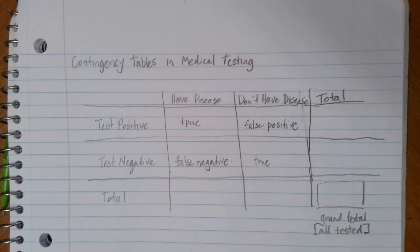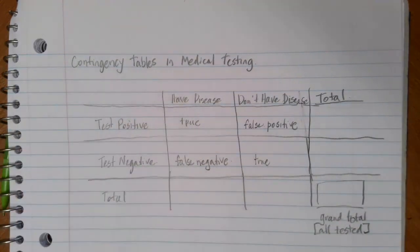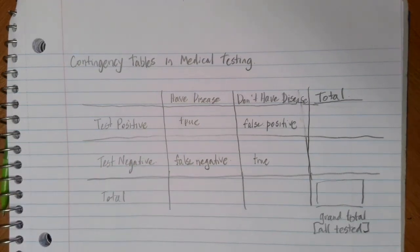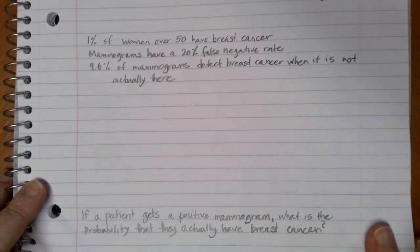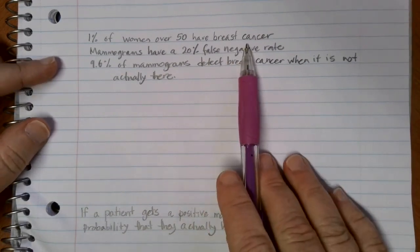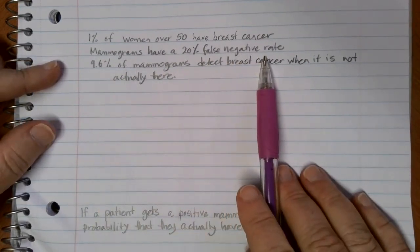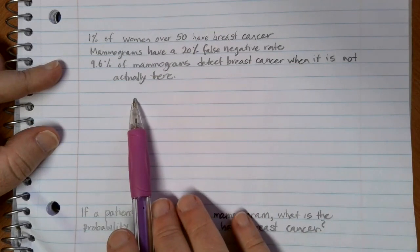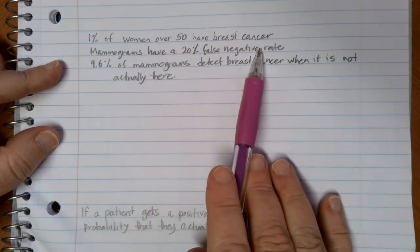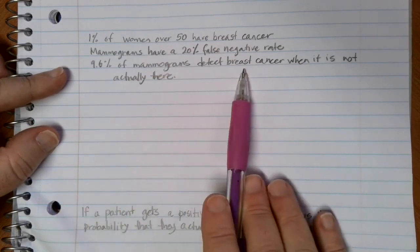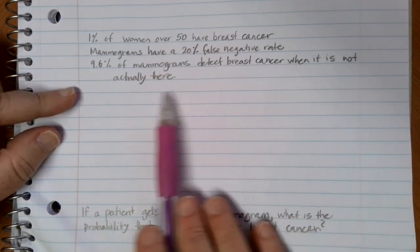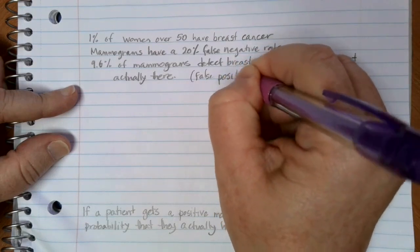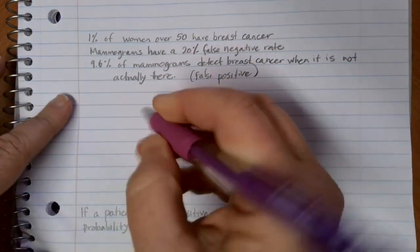With a false positive, you're getting a scary test result but you don't actually have the disease. These are different situations that can happen, and hopefully the error numbers are small and the correct ones are big. Now that we have a basic idea of how to set up a contingency table for medical testing, let's look at a specific sample. 1% of women over 50 have breast cancer. Mammograms have a 20% false negative rate — that's a negative result when you do actually have breast cancer. And 9.6% of mammograms detect breast cancer when it's not actually there — those are false positives.